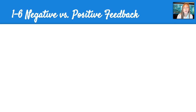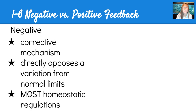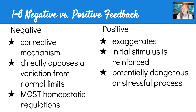Section 1-6 gets into something that can be kind of confusing: negative versus positive feedback. We're not talking like negative bad, positive good — usually both types of feedback are something the body wants to happen; it's basically why there is a response. The negative feedback loop is a corrective mechanism that directly opposes a variation from the limits the body wants to be at, and this refers to most of the homeostatic regulations that occur in our body. The positive feedback loop, on the other hand, exaggerates whatever is happening — the initial stimulus is reinforced, and this usually happens when there's something potentially dangerous or stressful going on and the body needs to act quickly.